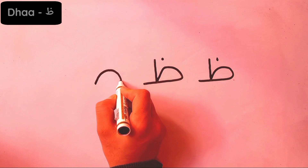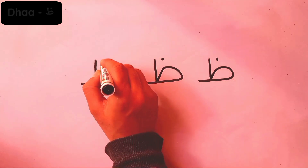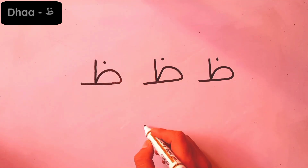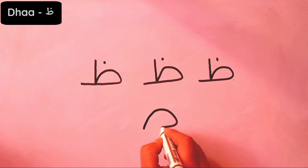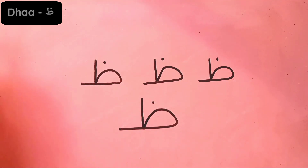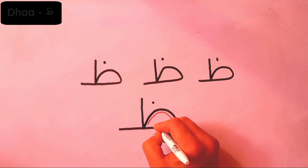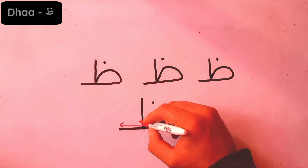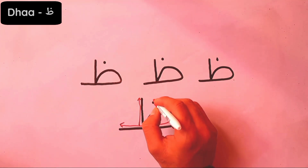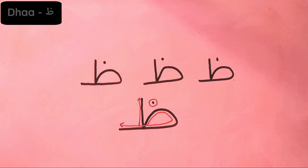VAA — this is how we write the letter VAA: a straight line and the dot. That's it, this is VAA. As you can see, the same way that we wrote the letter TAA — a straight line and a dot. VAA, very good, jayeed jiddan.